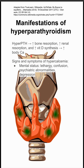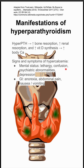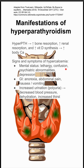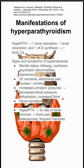There are signs and symptoms associated with this high calcium level: mental status changes, lethargy, confusion, psych abnormalities, depression, and some GI problems like anorexia, abdominal pain, nausea, and vomiting. You can have increased urination, called polyuria, which leads to decreased blood pressure, dehydration, and increased thirst. You can also get kidney stones.